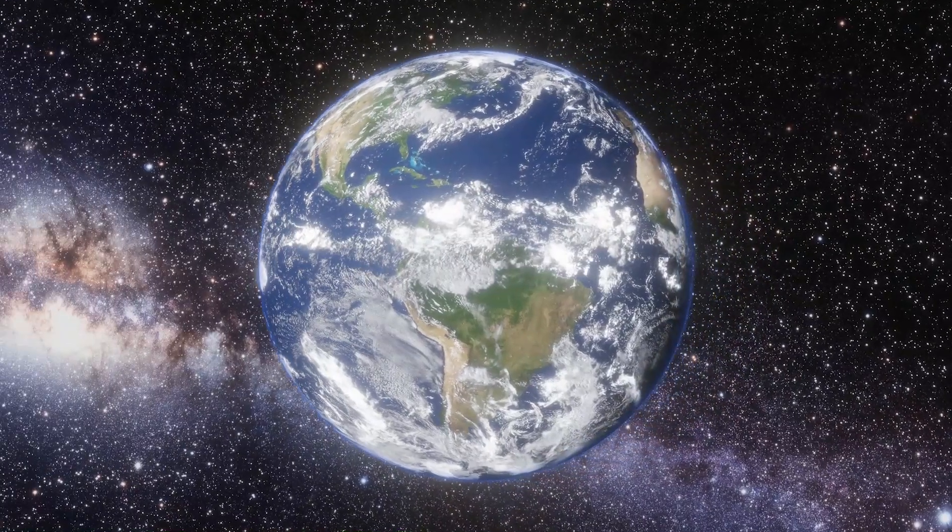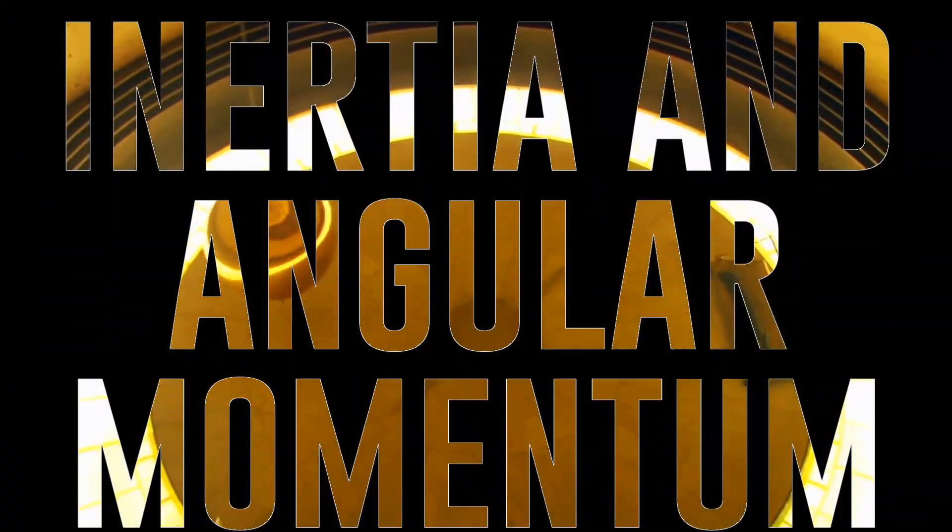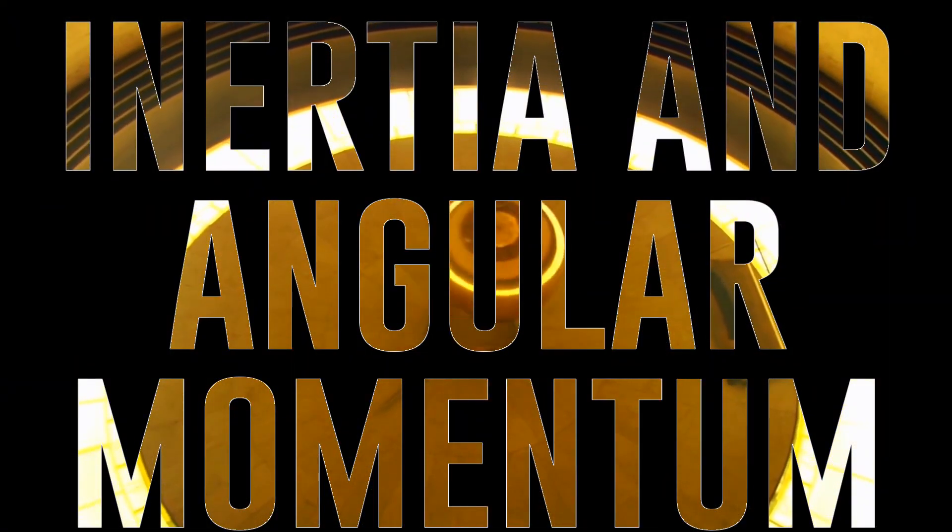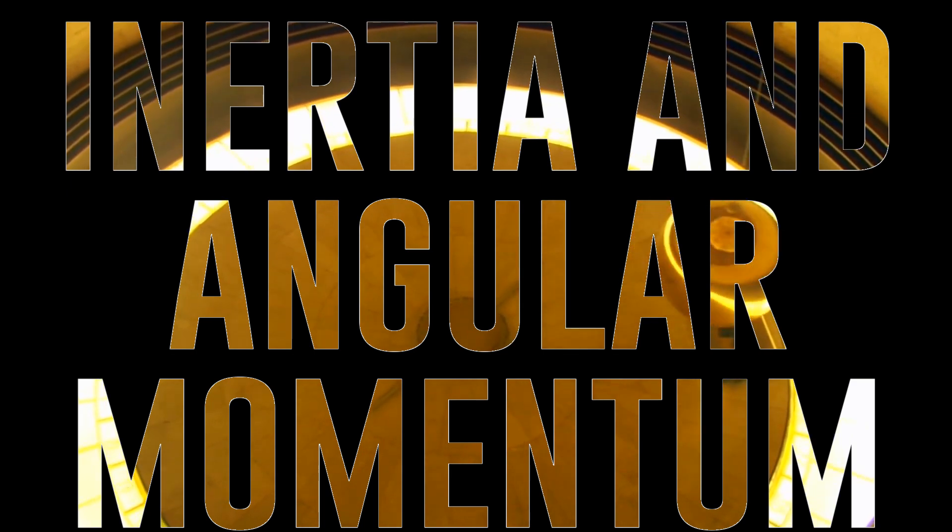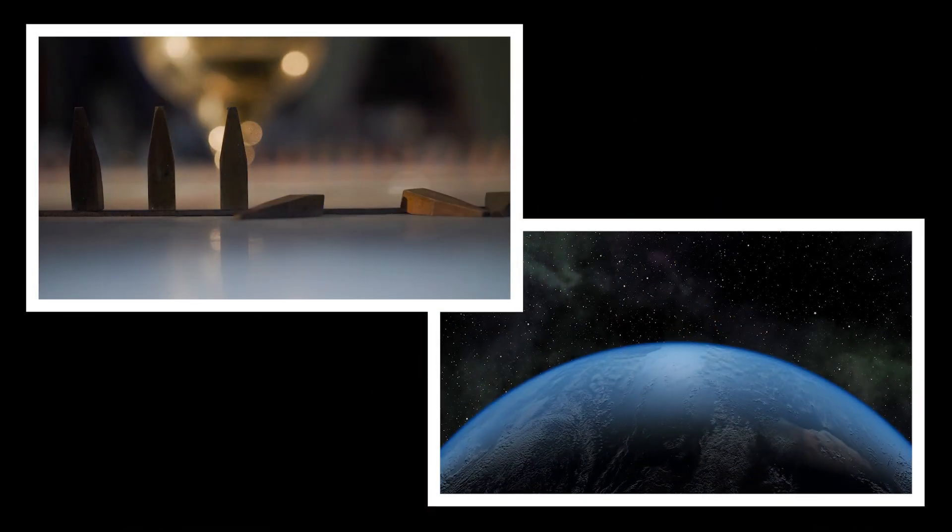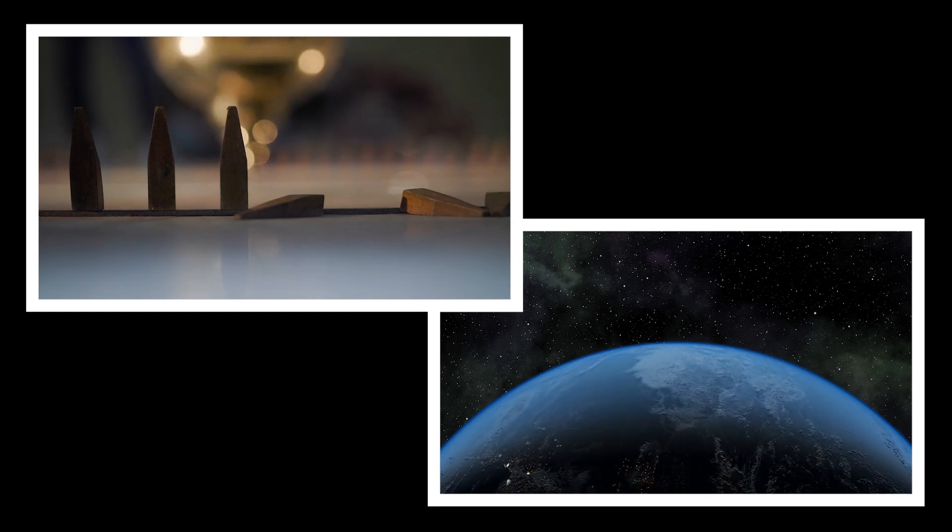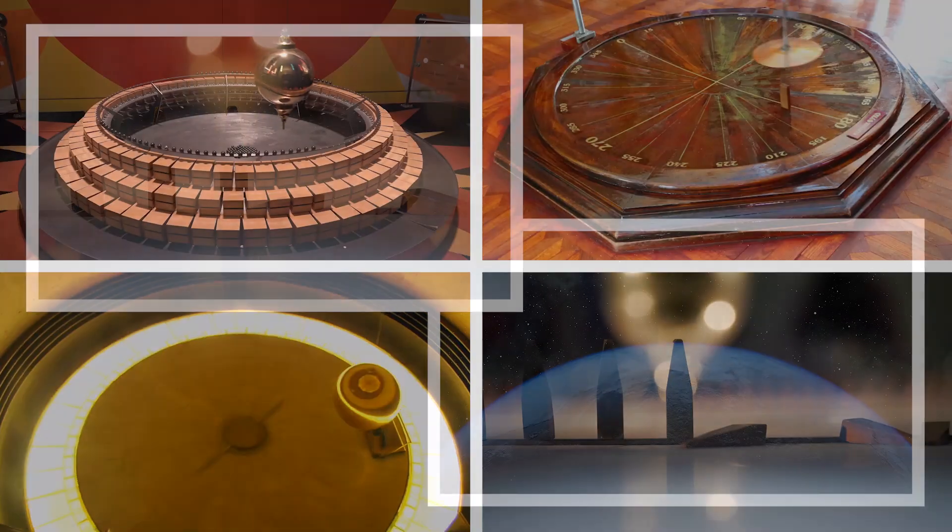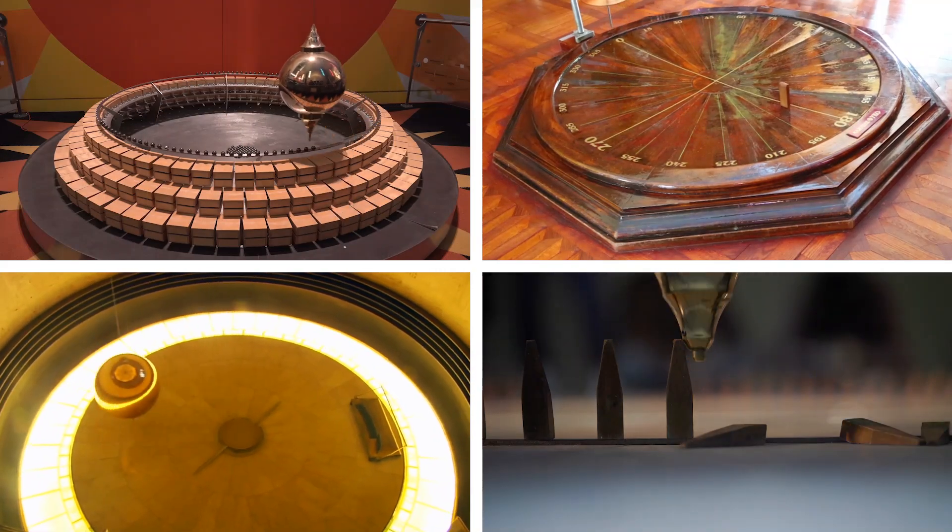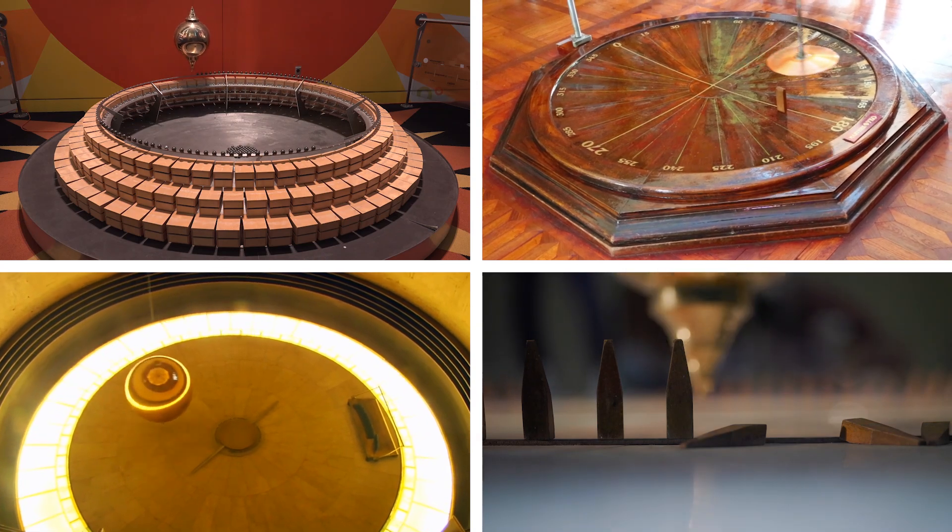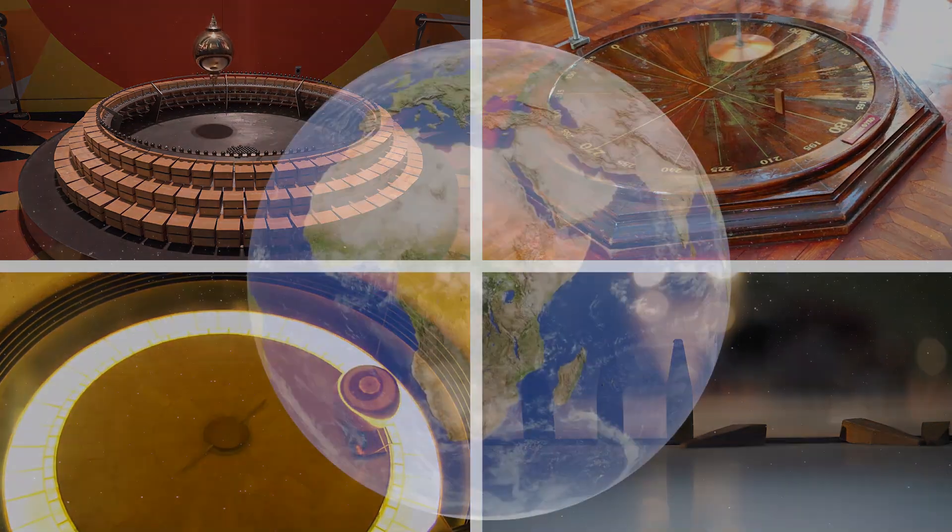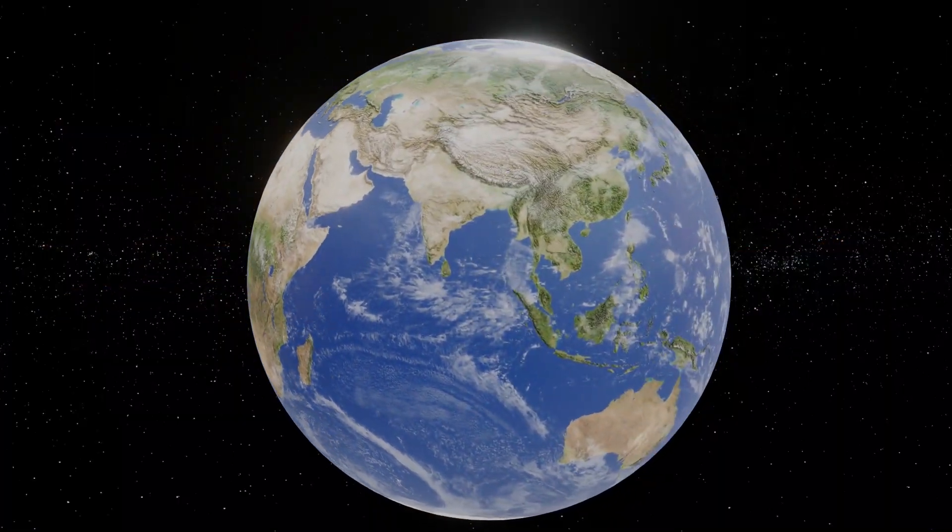Beyond demonstrating Earth's rotation, the Foucault pendulum is an educational tool for explaining inertia and angular momentum. Its simplicity and profound implications make it invaluable in science education globally. This simple device reveals the secrets of Earth's rotation and your specific latitude, making our planet's invisible movements visible.